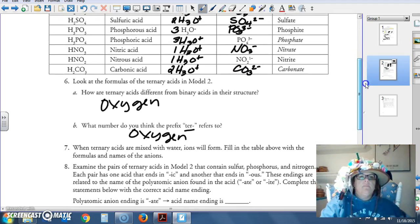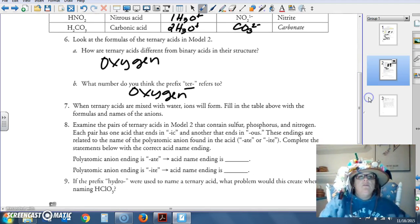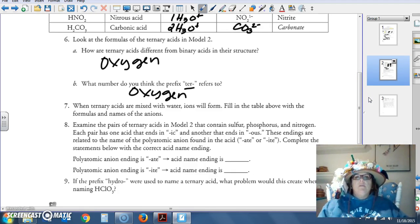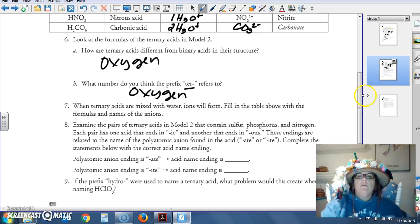Carbonic acid. When ternary acids are mixed with water, ions will form. Fill in the table above with the formulas and name. Well, we said that already, didn't we?